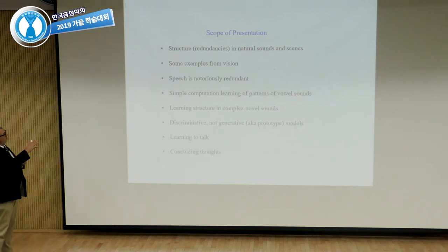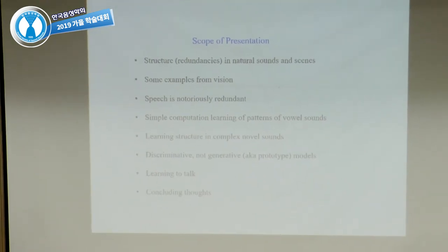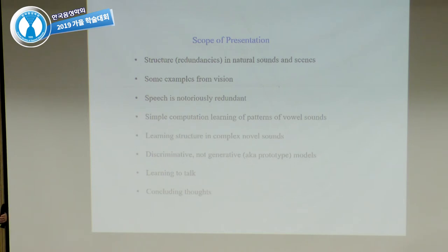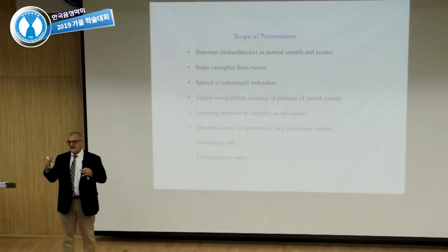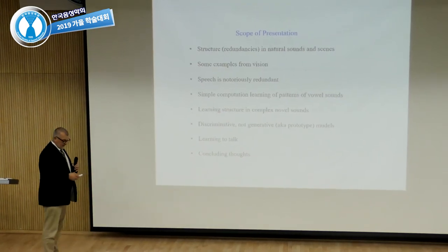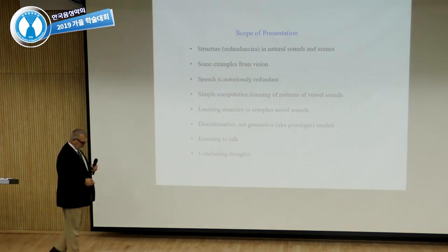I'll begin with some broad picture about structure—redundancies in natural sounds and scenes. I'd like to share a couple of examples from vision, because these kinds of ideas have been around a while in vision science and have been very productive in understanding high-level vision. Speech is notoriously redundant. Then I'll step through a simple computational learning of patterns of vowels, then some work dealing with novel sounds so we can look at how people exploit covariance de novo, and then just a few brief notes on the formal properties of these kinds of models.